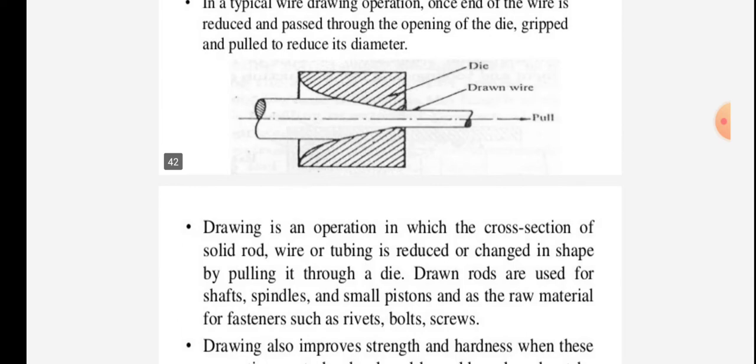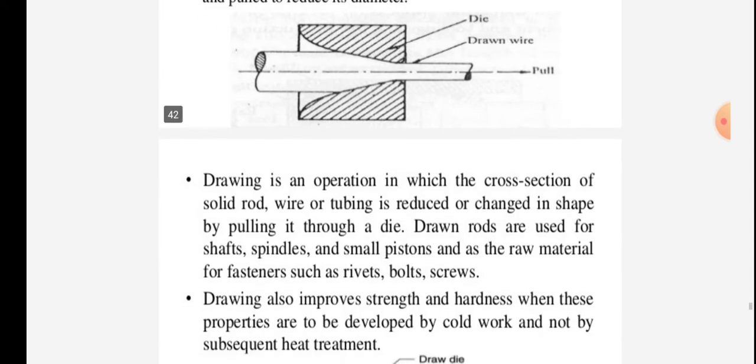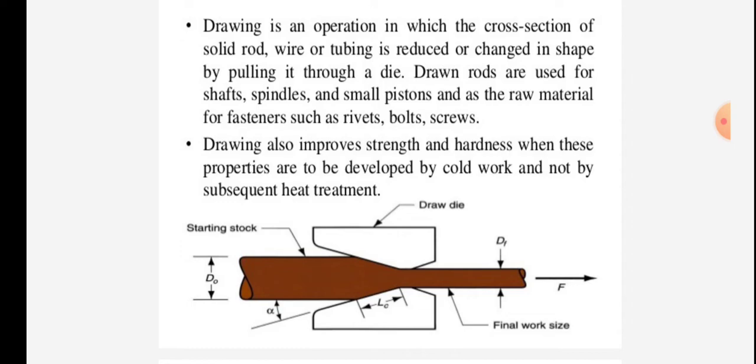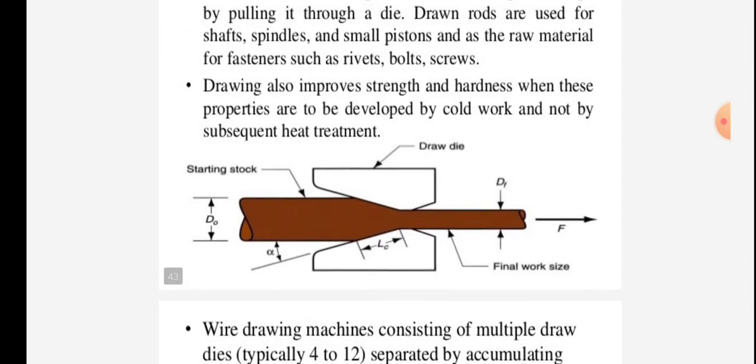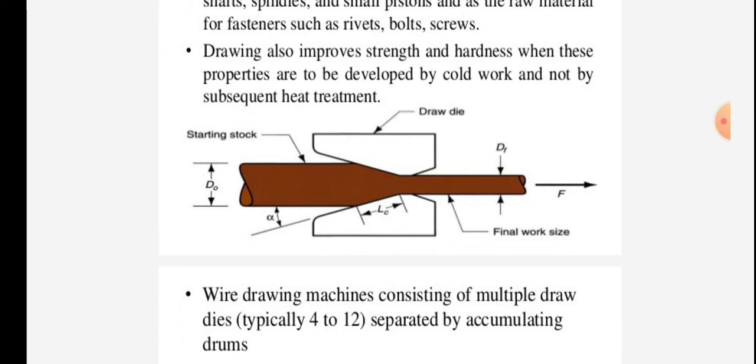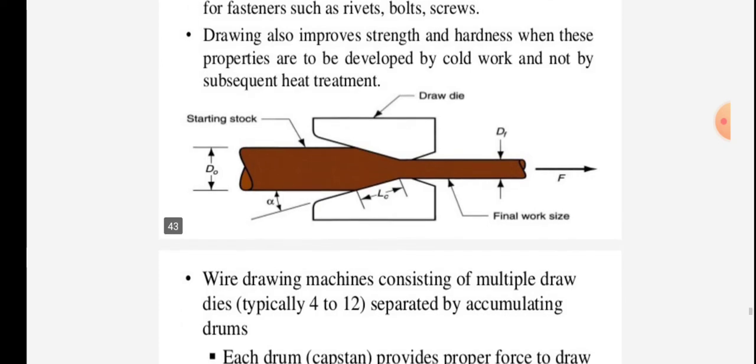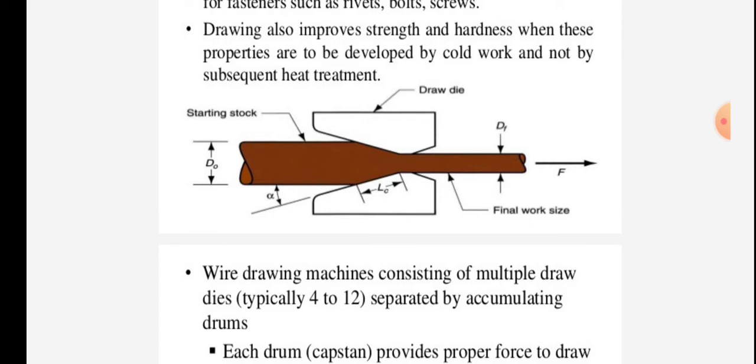As shown in figure, the die is given and drawn wire is pulled. Drawing is an operation in which the cross section of solid rod, wire, or tubing is reduced or changed in shape by pulling it through a die. Drawn rods are used for shafts, spindles, and small pistons, and as raw material for fasteners such as rivets, bolts, and screws. Drawing also improves strength and hardness when these properties are to be developed by cold work and not by subsequent heat treatment.